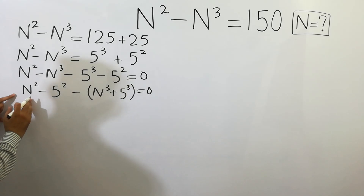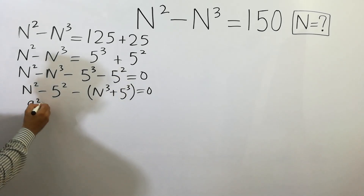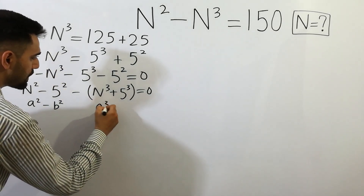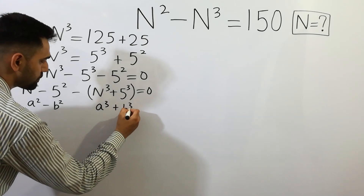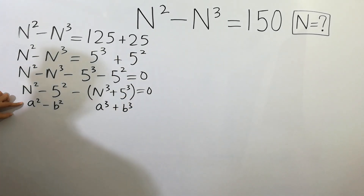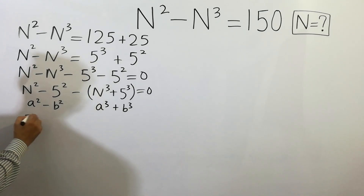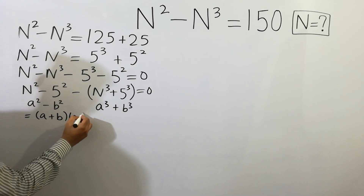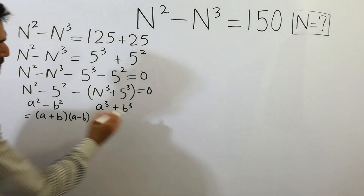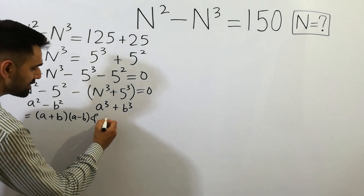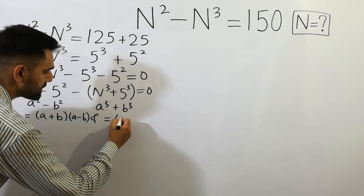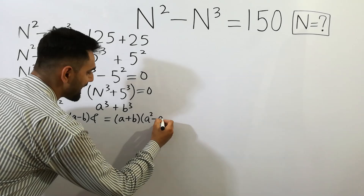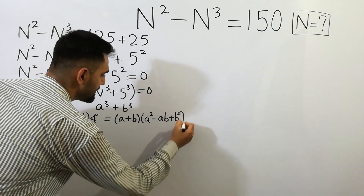Here, this is equal to a squared minus b squared and this is equal to a cubed plus b cubed. As we know, a squared minus b squared equals to (a plus b)(a minus b), and a cubed plus b cubed equals to (a plus b)(a squared minus ab plus b squared).